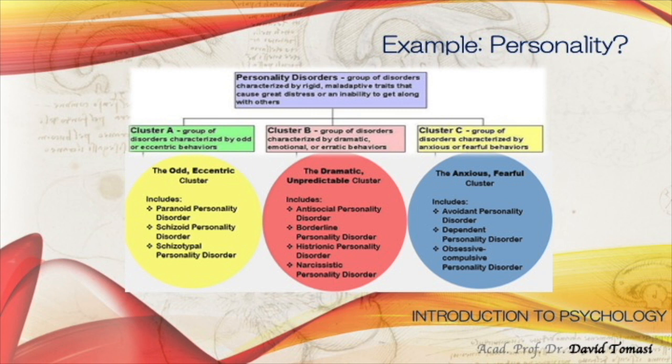In yellow is the odd/eccentric cluster — Cluster A; in red is the dramatic/unpredictable cluster — Cluster B; in blue is the anxious/fearful cluster — Cluster C. Cluster A includes paranoid personality disorder, schizoid personality disorder, and schizotypal personality disorder. Cluster B includes antisocial personality disorder, borderline personality disorder, histrionic personality disorder, and narcissistic personality disorder. Cluster C includes avoidant, dependent, and obsessive-compulsive personality disorder.